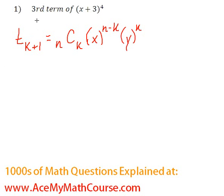Great, so we're looking for the third term, which means that k+1 equals 3. We can subtract 1 from both sides and k will be 2. That's because we're looking for the third term.